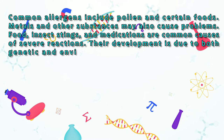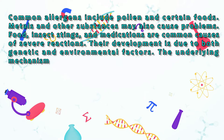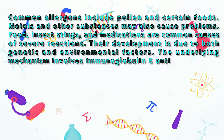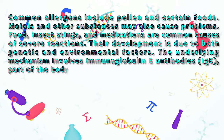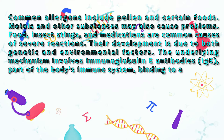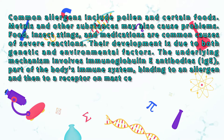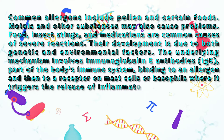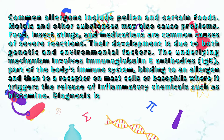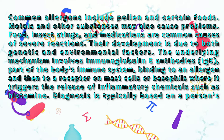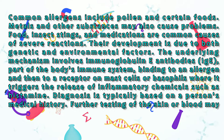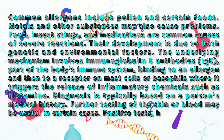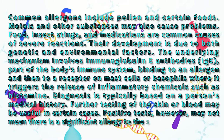Their development is due to both genetic and environmental factors. The underlying mechanism involves immunoglobulin E antibodies (IgE), part of the body's immune system, binding to an allergen and then to a receptor on mast cells or basophils, where it triggers the release of inflammatory chemicals such as histamine. Diagnosis is typically based on a person's medical history. Further testing of the skin or blood may be useful in certain cases. Positive tests, however, may not mean there is a significant allergy to the substance in question.